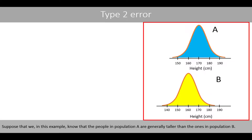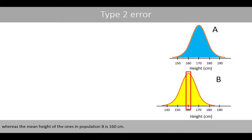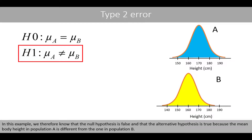Suppose that we know that people in population A are generally taller than the ones in population B. The mean height of population A is 170 centimeters, whereas the mean height of population B is 160 centimeters. In this example, we therefore know that the null hypothesis is false and that the alternative hypothesis is true because the mean body height in population A is different from the one in population B.